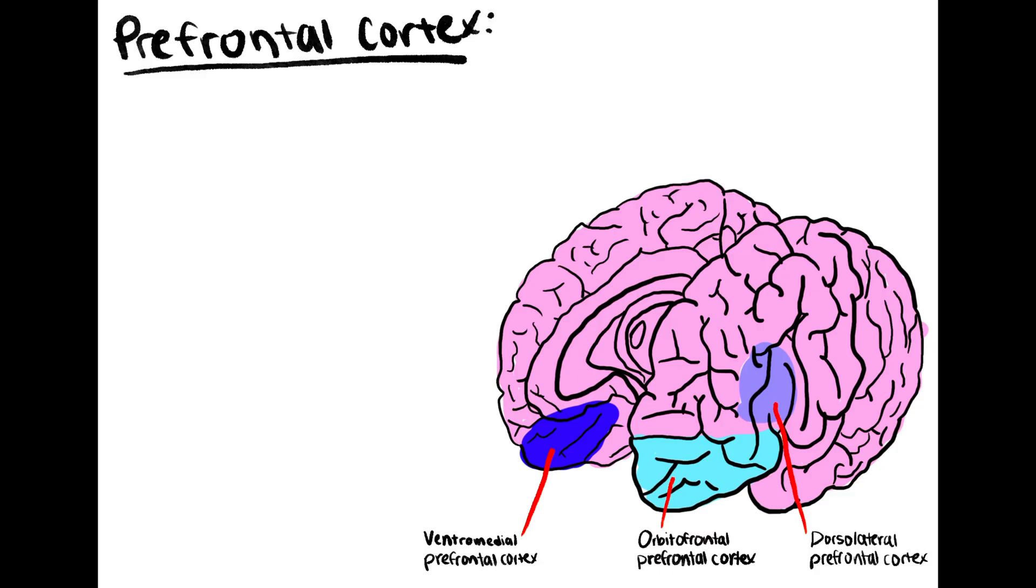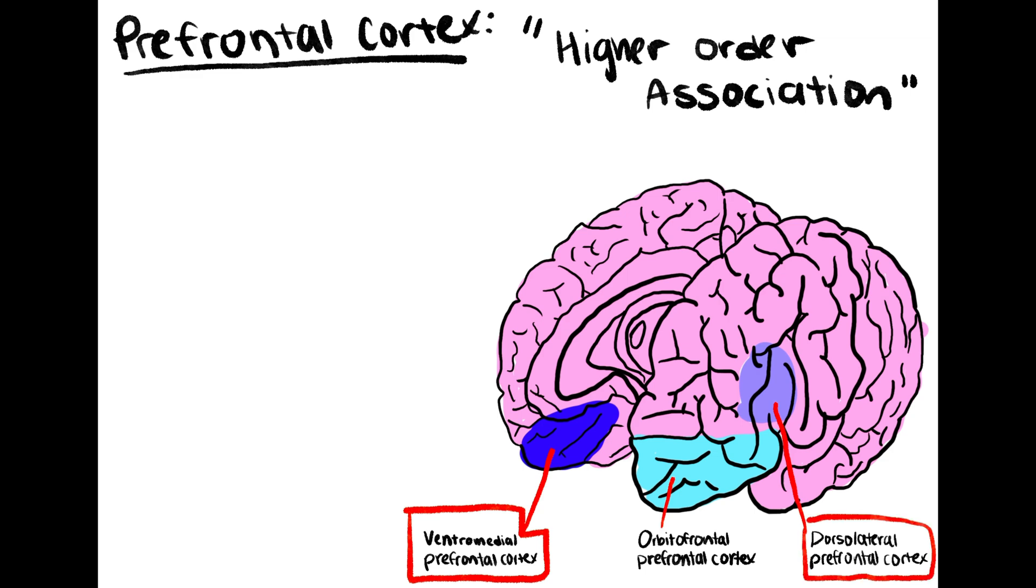The prefrontal cortex is regarded as the higher association center of the brain, and it plays key roles in the social brain. We mainly focus on two regions in the prefrontal cortex, the ventromedial prefrontal cortex and the dorsolateral prefrontal cortex.